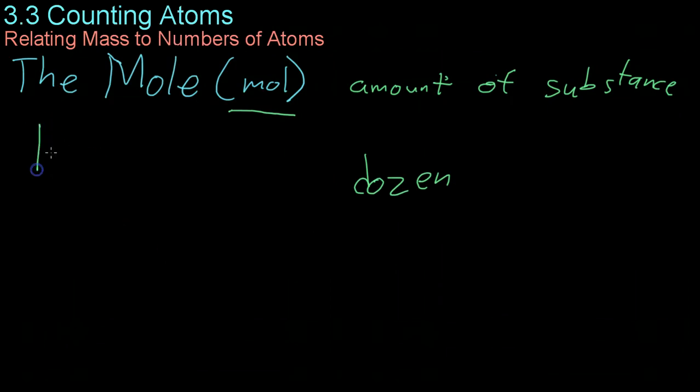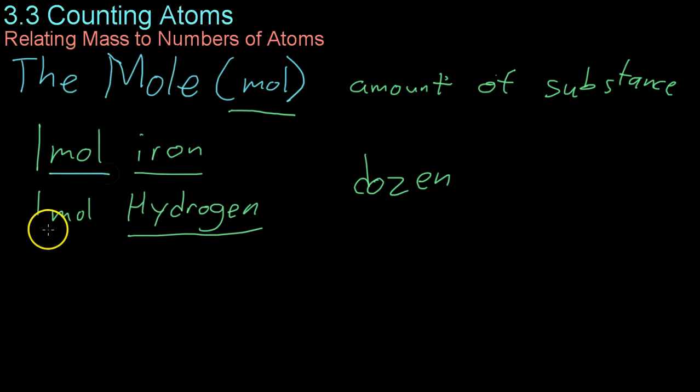Similarly, a chemist can ask for one mole of iron or one mole of hydrogen. And he's going to get two very different things with two very different masses. But he's still going to get the same amount of each. He's going to get exactly one mole's worth.